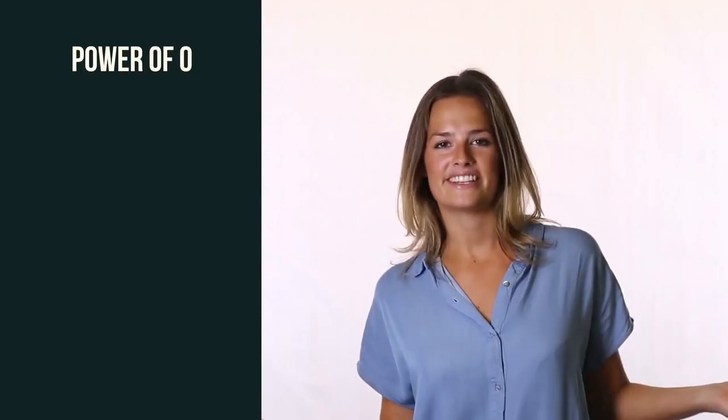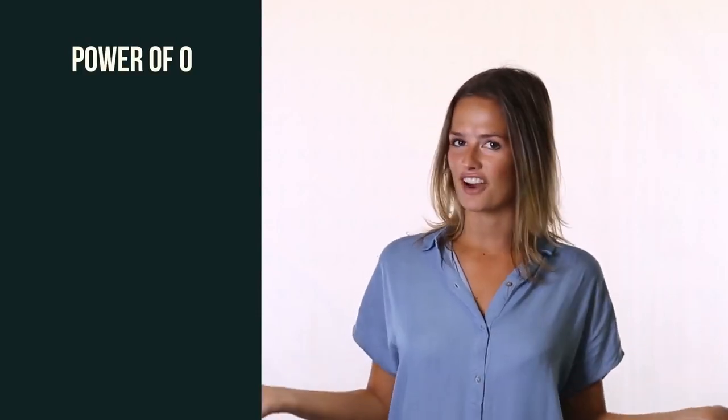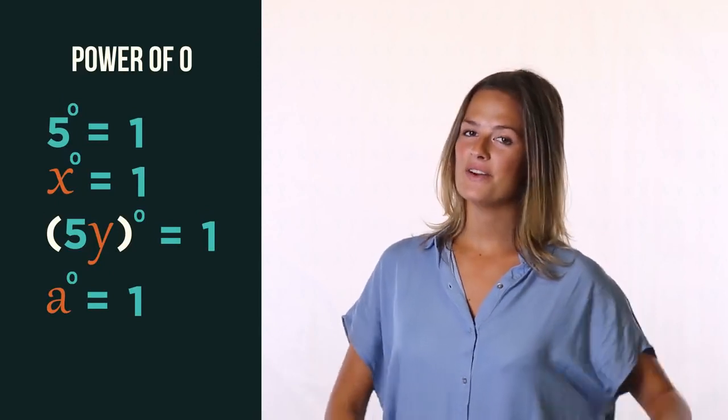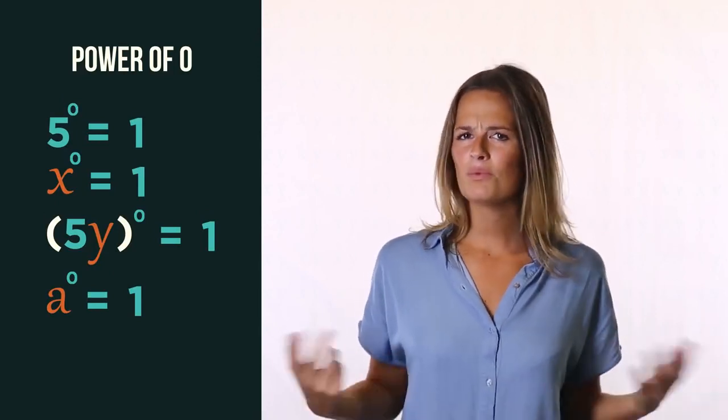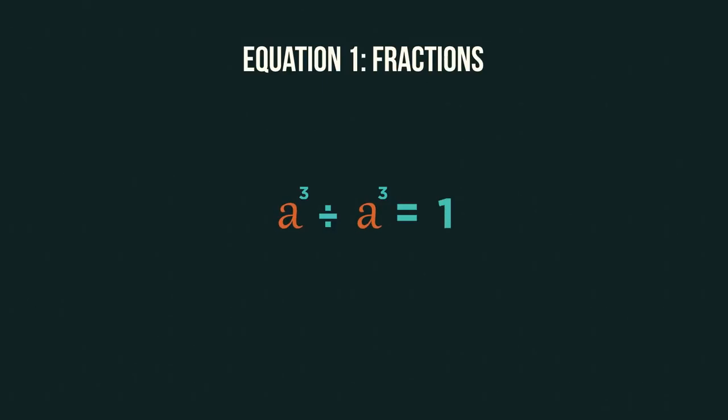So what do you notice about the power of zero? Anything to the power of zero is one. But why is this? Let's use our knowledge of fractions and also dividing indices to see why. Do you agree that anything divided by itself is one? So a to the power of three goes into a to the power of three once. That's our first equation.